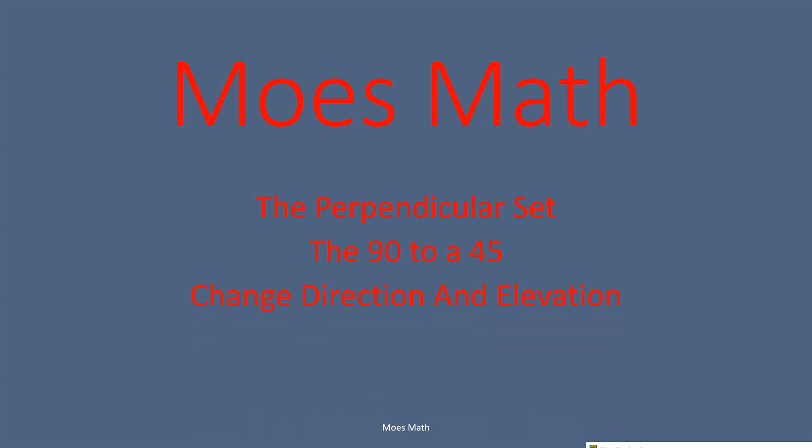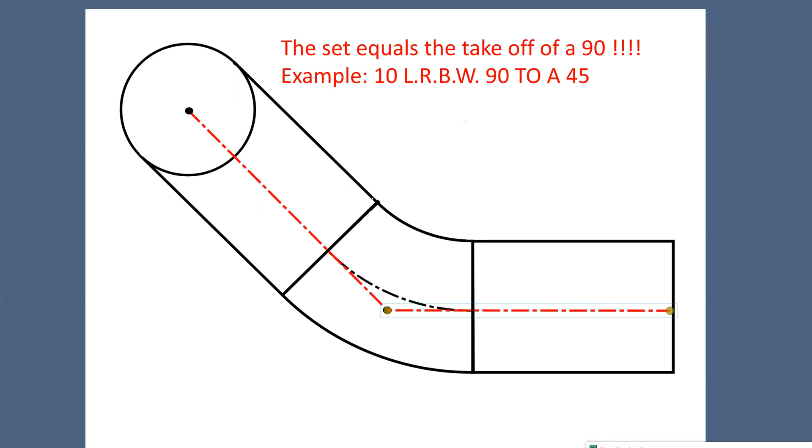We're going to change direction and elevation with three welds and we'll be using weld fittings. The set will equal the takeoff of the 90. Example problem will be a 10 inch long radius butt weld 90 directly to a 45, no fill piece, one weld. Very clean installation.